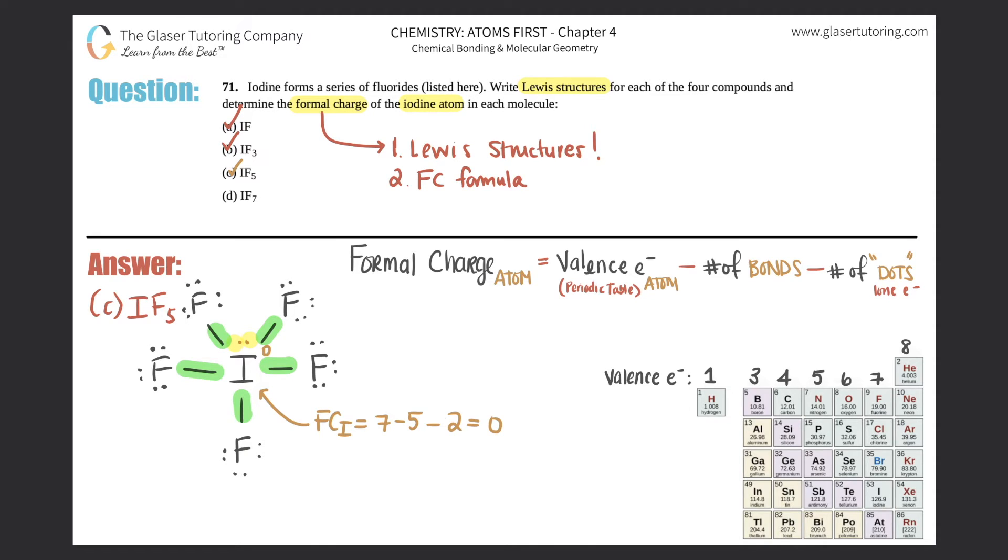Crazy, they're all neutral! Let's just see if (d) is neutral as well. I'm going to put (d) down here: IF₇. So that means that iodine, which is in the middle, will have seven fluorines surrounded - the iodine and each fluorine just like before has the three lone pairs.